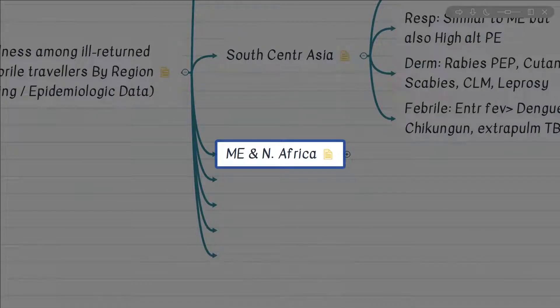Let's discuss the pattern of most common illnesses in travelers from Middle East and North Africa. The North African countries to remember in this region include Algeria, Egypt, Libya, Morocco, Sudan, Tunisia, and Western Sahara. These countries, though few, produce one-third of the total African continent's GDP — they are most likely oil-rich countries — which helps contrast them with Sub-Saharan African countries.